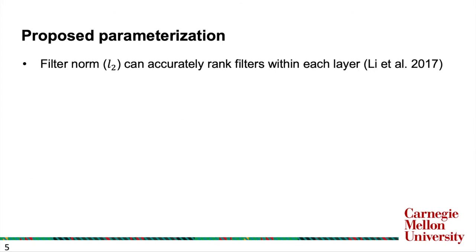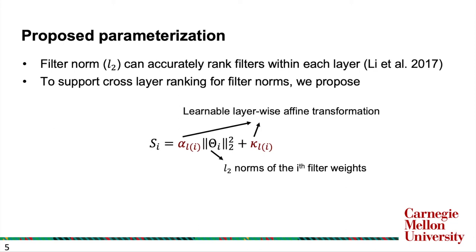We parameterize the global ranking by starting with the empirical results that filter norms can accurately rank filters within each layer. To support cross-layer ranking for filter norms, we propose a new metric that consists of learnable layer-wise affine transformations on top of filter norms. With these metrics, the goal now is to learn these alpha and kappa.